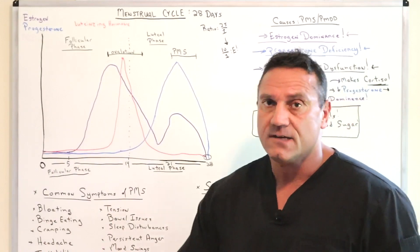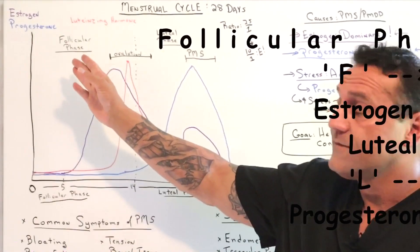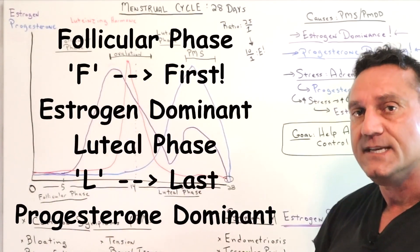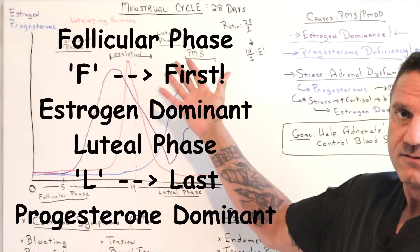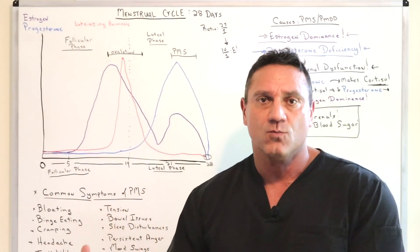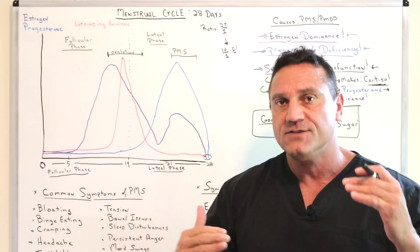Now with the menstrual cycle, remember you have the first phase, the follicular phase, which is more estrogen dominant. You have the last phase, luteal phase, which is more progesterone dominant. Now the females, you make progesterone, it's the ratio about 25 to 1.